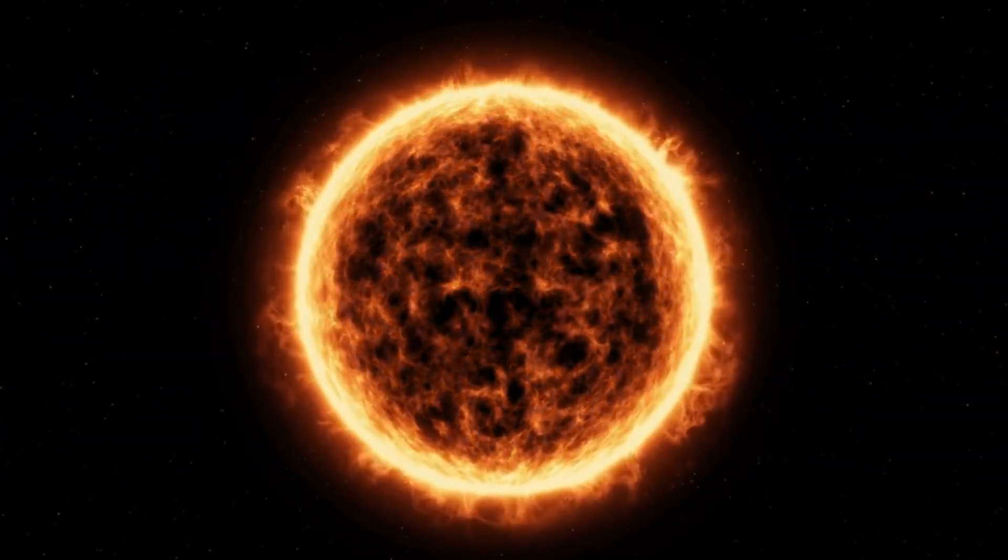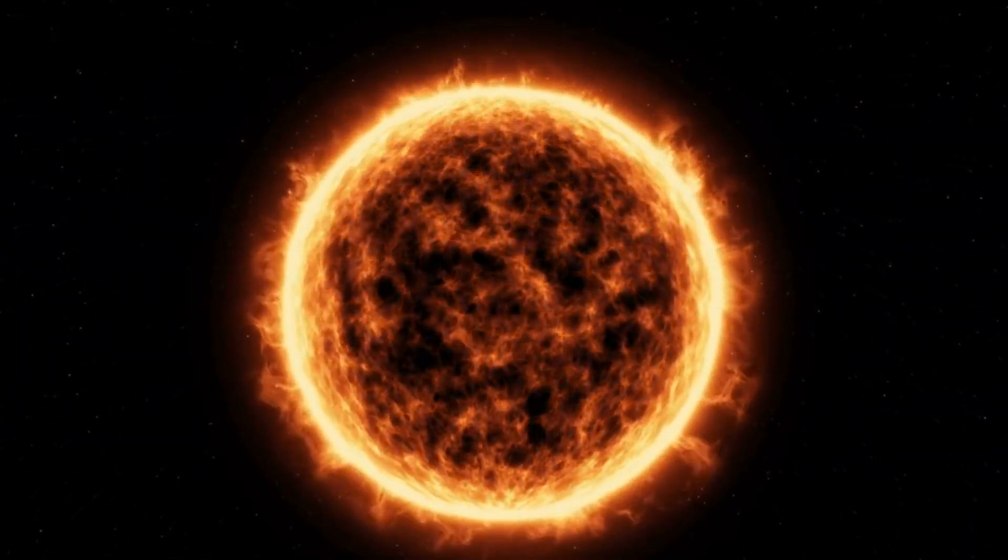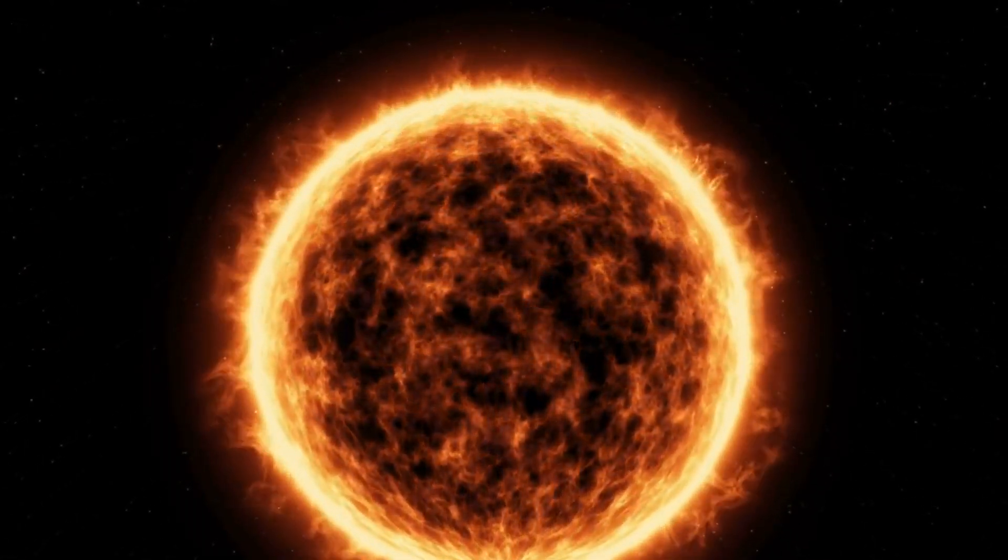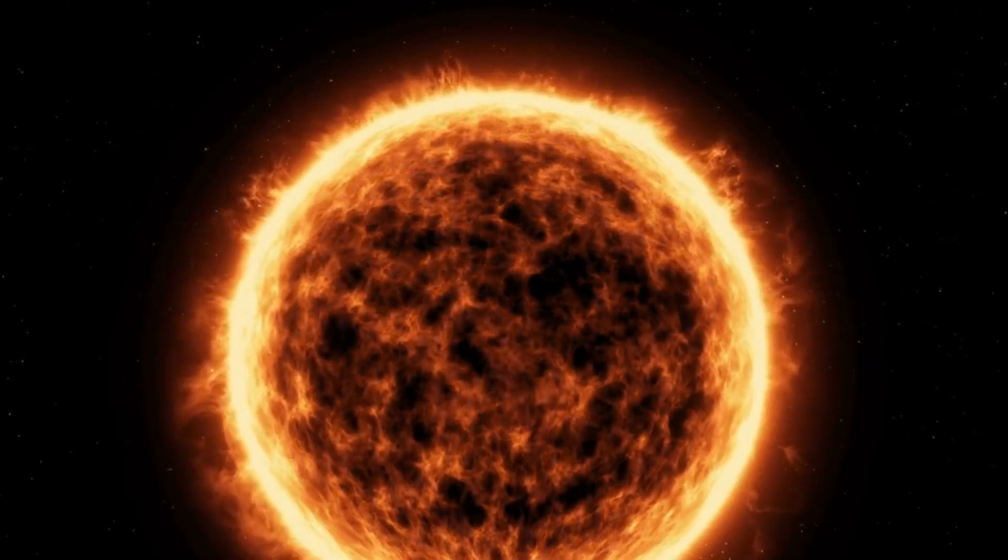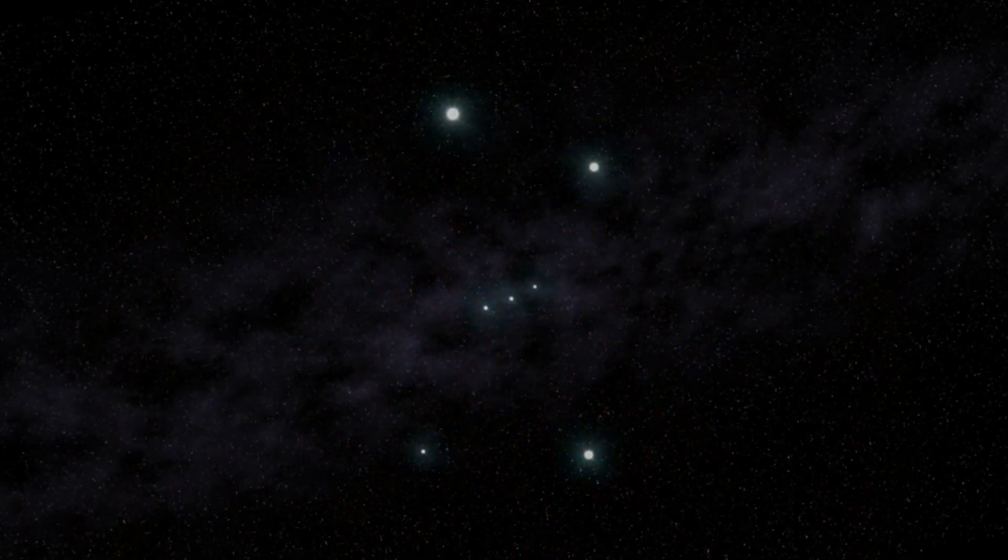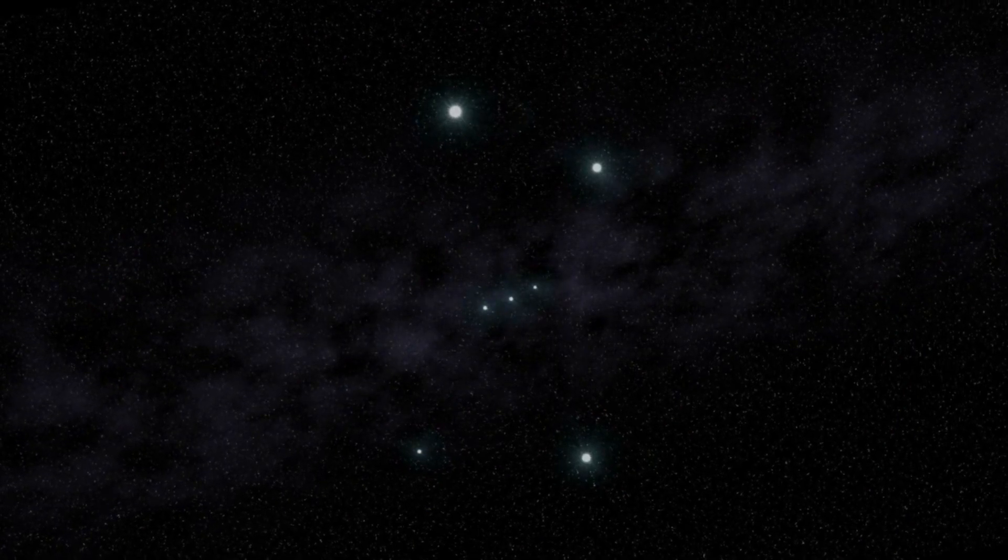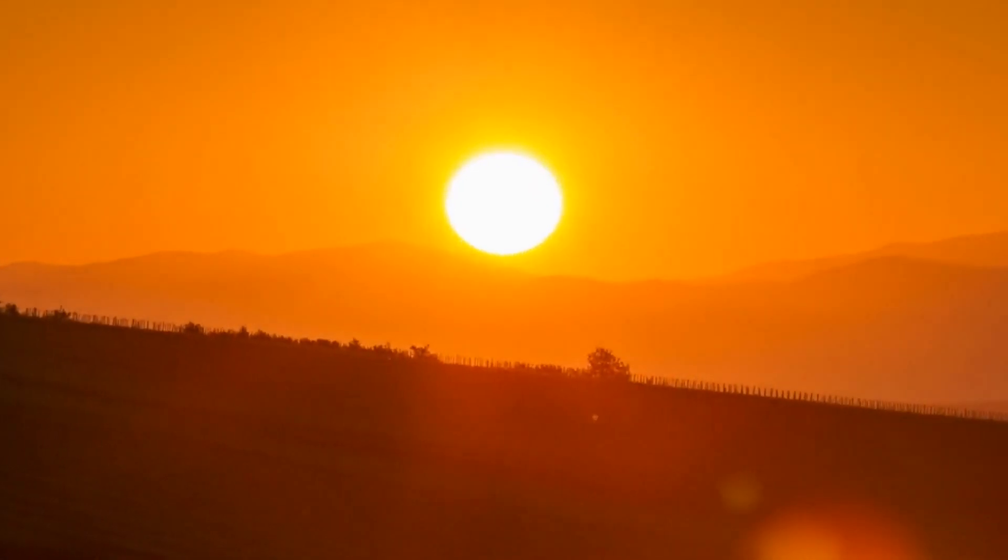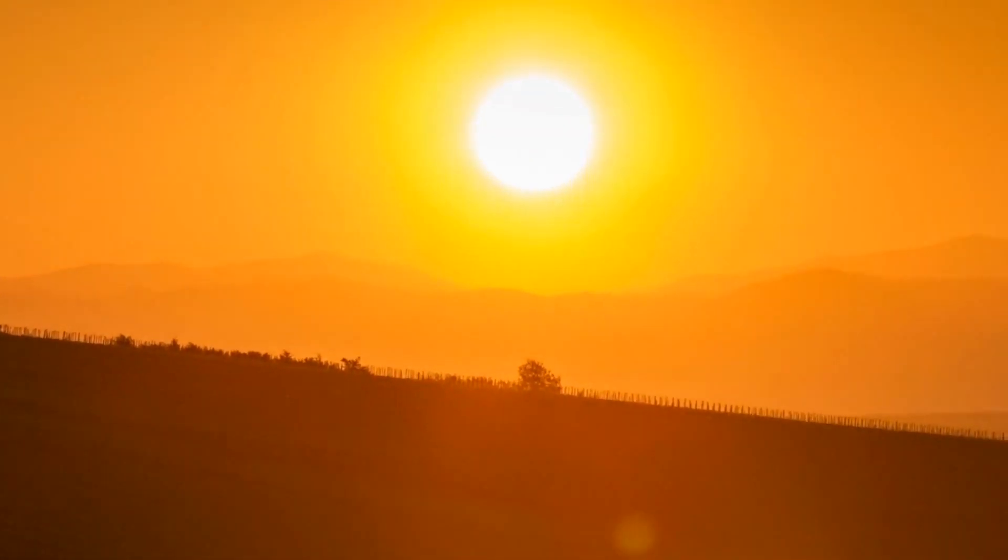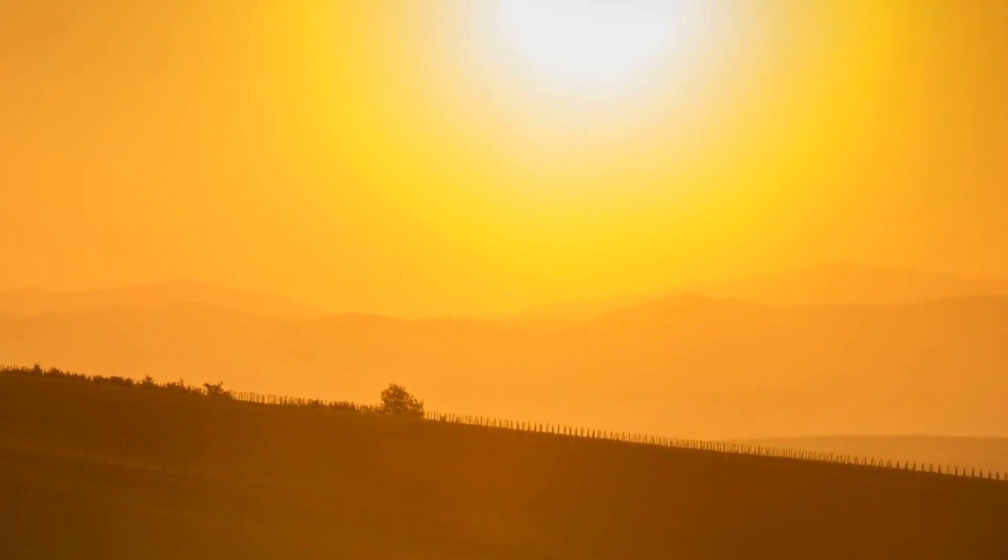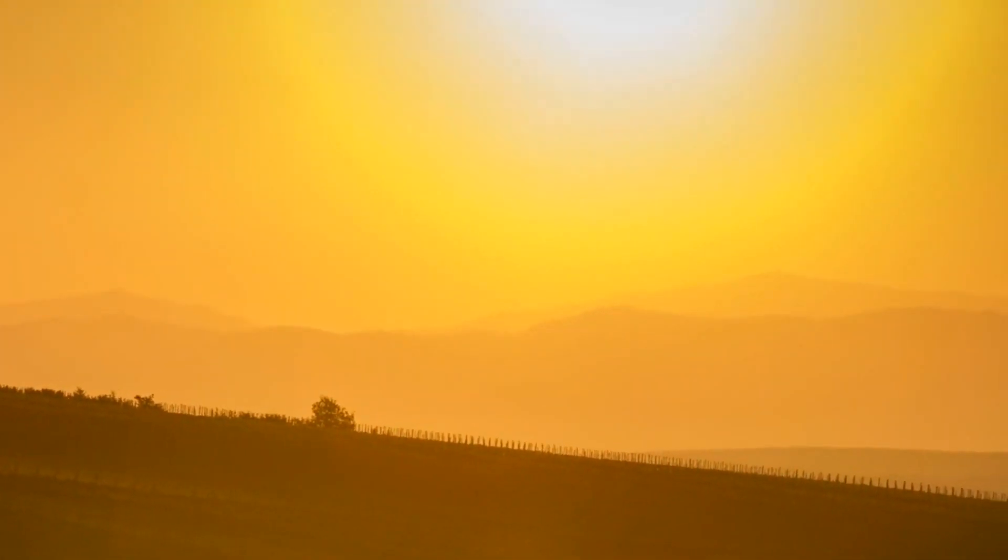So who, or what, is Betelgeuse? You might recognize the name as that of a mischievous character from a Tim Burton film. But today we're talking about a star, one of the most captivating stars we can see from Earth. Betelgeuse sits approximately 700 light years away in the constellation of Orion. When we talk about its size, we're talking about a celestial behemoth so vast that it could contain more than 700 of our suns inside of it.